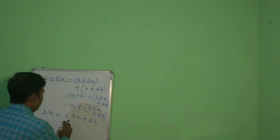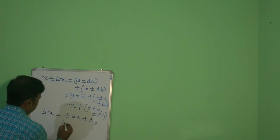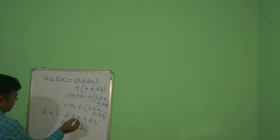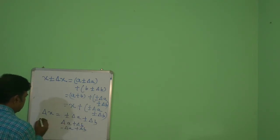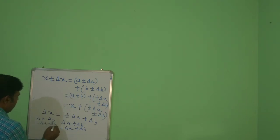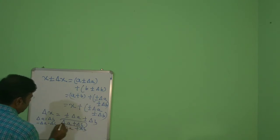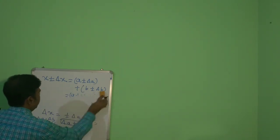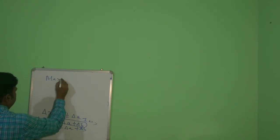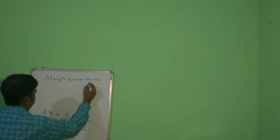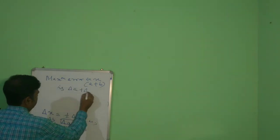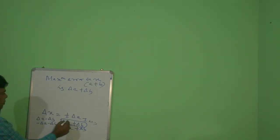In this case, four combinations are possible: delta A plus delta B, minus delta A plus delta B, delta A minus delta B, and minus delta A minus delta B. Out of these four combinations, the maximum value is delta A plus delta B. That means the maximum error in X — which is the addition of two measured values A plus B — is delta A plus delta B.